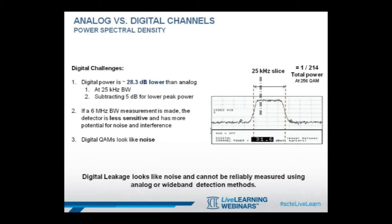This means that if we were to use analog detectors to measure the digital leakage, they would only pick up 1/240th of the signal. If we widen the measurement bandwidth of the detectors to 6 MHz in order to capture all the power of the digital channel, it causes another set of problems. The wider bandwidth lets in unwanted noise, and we lose the sensitivity we need to measure the digital leakage. On top of that, QAM signals are carried about 5 dB lower than analog carriers, so their leakage power levels will be much harder to measure.